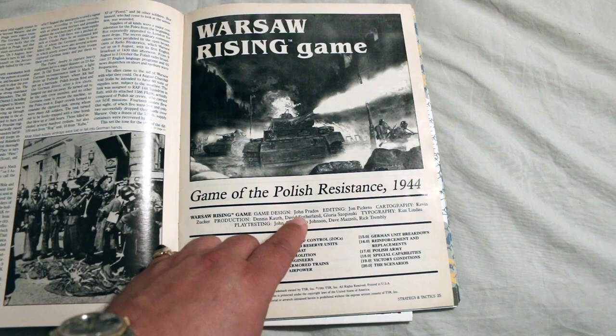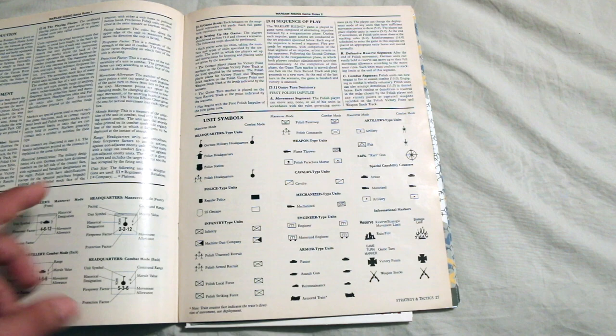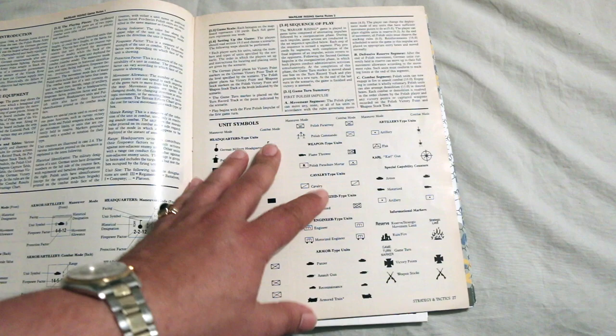Yes, game of the Polish Resistance, 1944. It's designed by John Prados. So it starts out showing the different unit symbols. Looks like it's using standard military symbols.